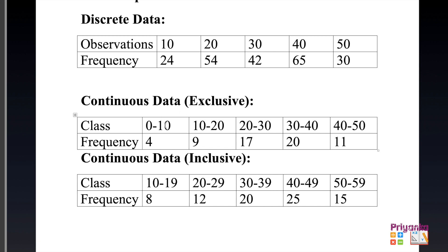In exclusive class, the upper boundary limit is repeated as the next class's lower boundary limit — for example 0 to 10, then 10 to 20, where 10 is repeated. In inclusive class, like 10 to 19, the next class starts from 20, so 19 is not repeated in the next class.